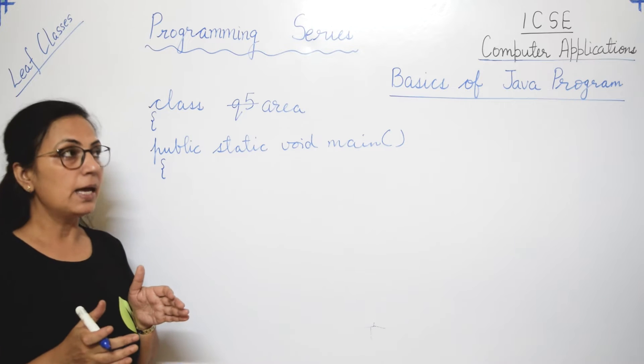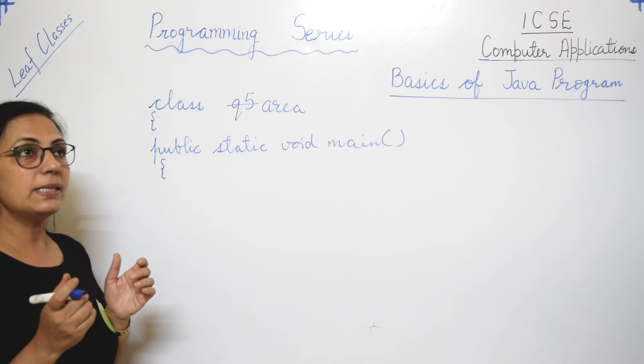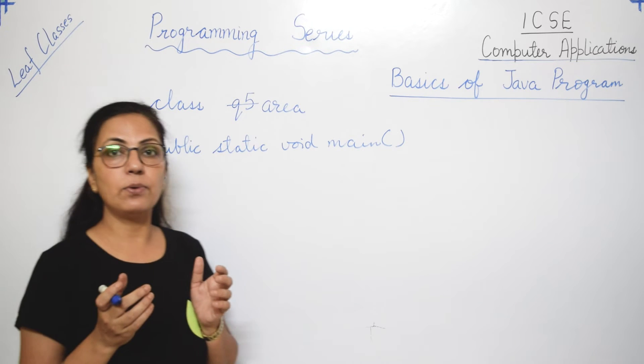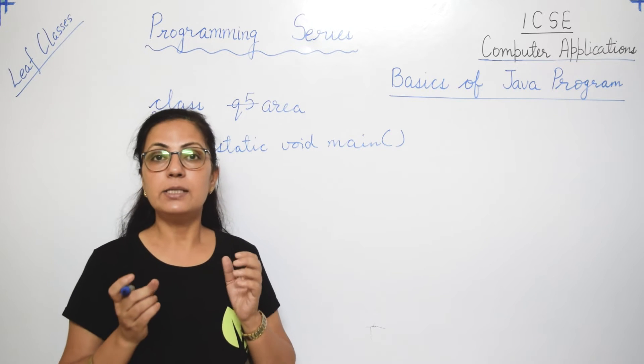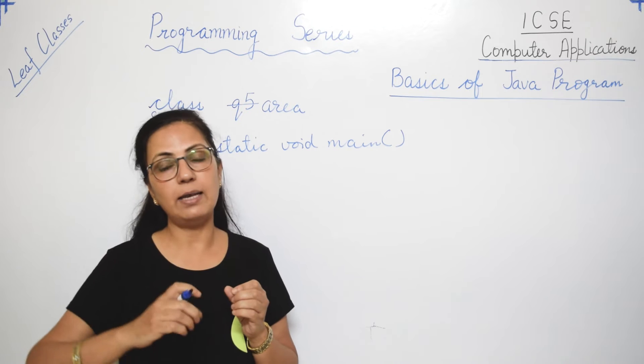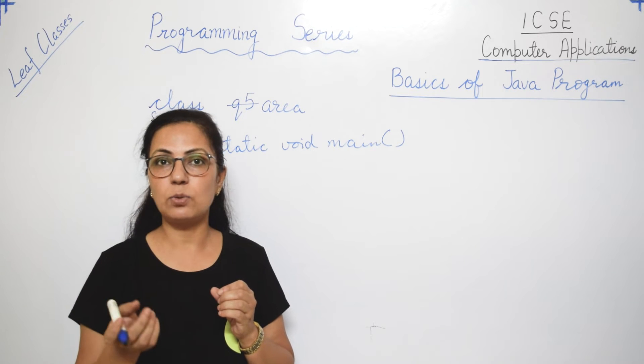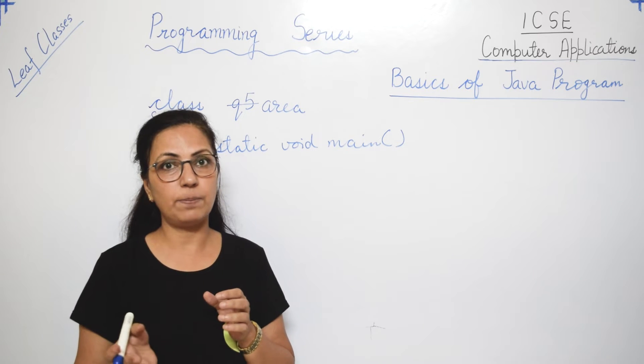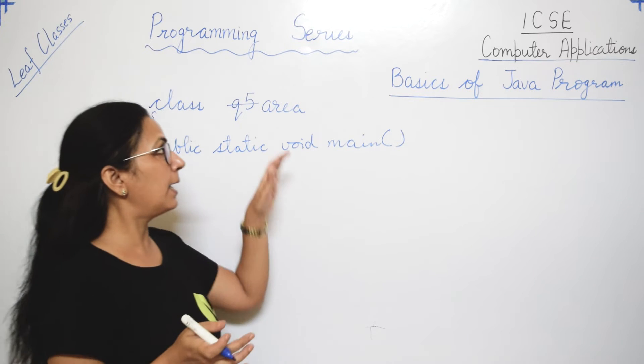'public' is the access specifier which tells the accessibility of the function. 'static' means this function can be executed without creation of an object. 'void' means this function will not return any value. For now, just learn that this is the main function which we have to write in every program. The function body is also enclosed within a pair of curly braces.